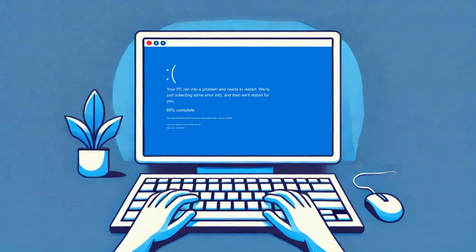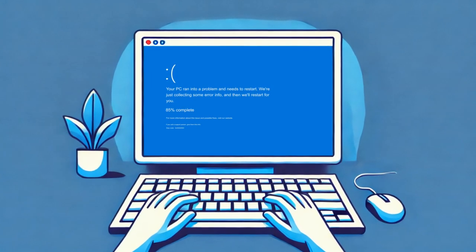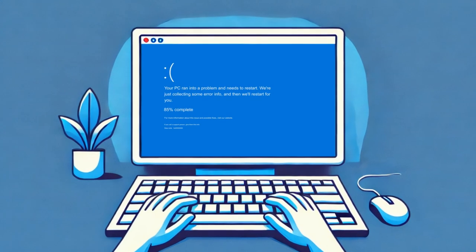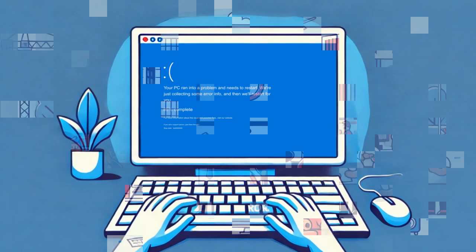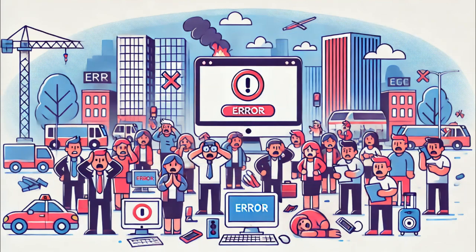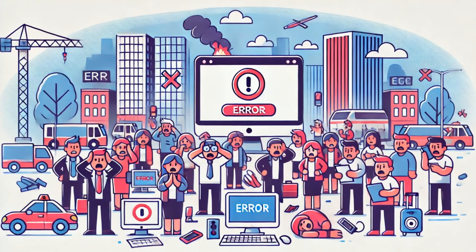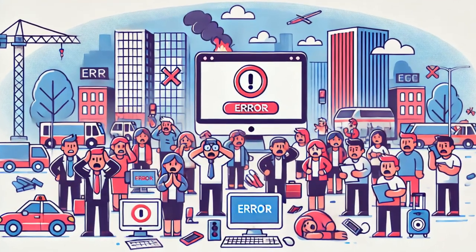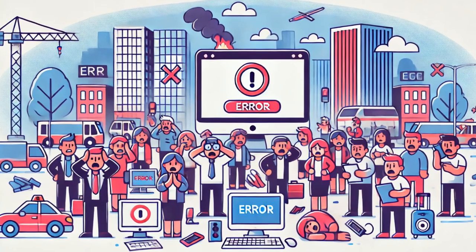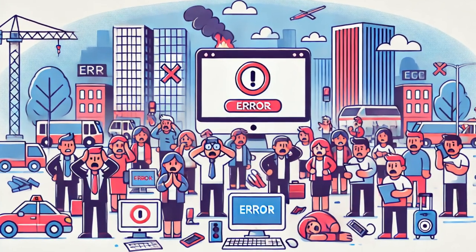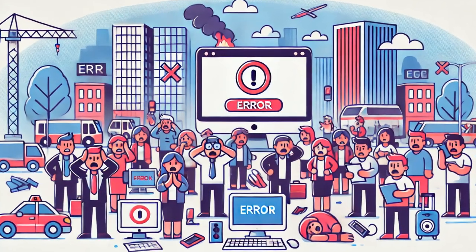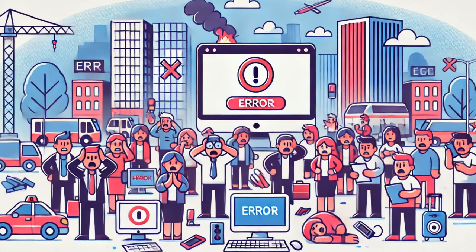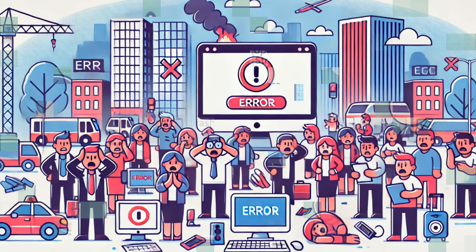Hello. I will explain the CrowdStrike incident that occurred on July 19, 2024, which caused many systems to become non-functional. This incident led to significant disruptions in our daily lives. Based on information from some foreign sources, I would like to share the findings regarding the root cause of this issue. Let's examine the system error behind the incident and how it relates to memory access problems.